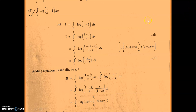Adding equations 1 and 2: 2i equals integral 0 to 1 of log((1 minus x) upon x) dx plus integral 0 to 1 of log(x upon (1 minus x)) dx. Using log a plus log b equals log(a times b), we can combine these. The terms x and (1 minus x) cancel each other, giving log 1. Since log 1 equals 0, integral 0 to 1 of 0 dx equals 0 is the answer.